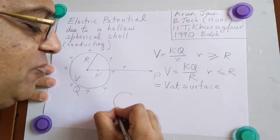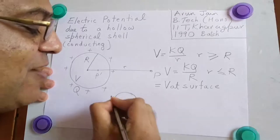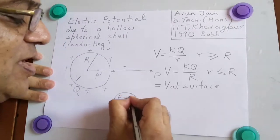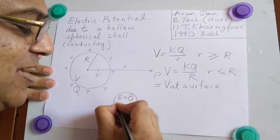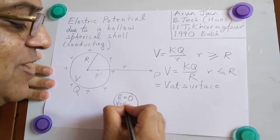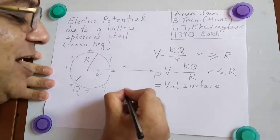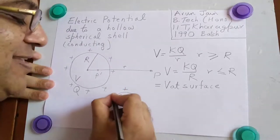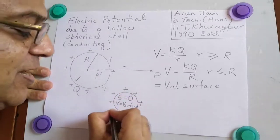This is very important to remember. If we have a hollow spherical conductor, every point inside electric field is zero and every point inside V is same as V at surface. This is a charge Q that is uniformly distributed over this conducting spherical shell.